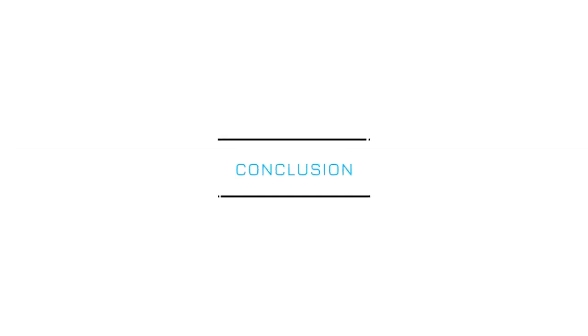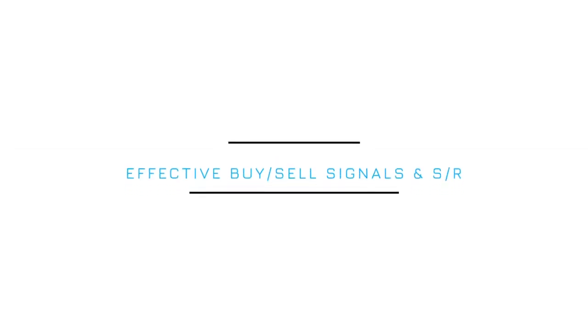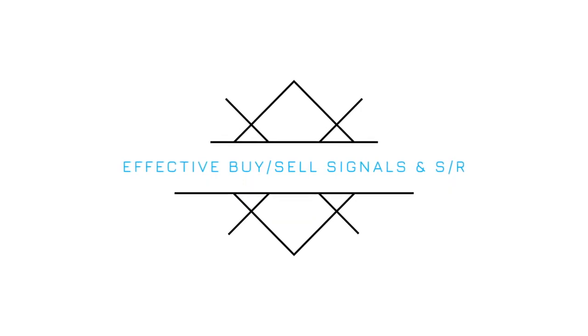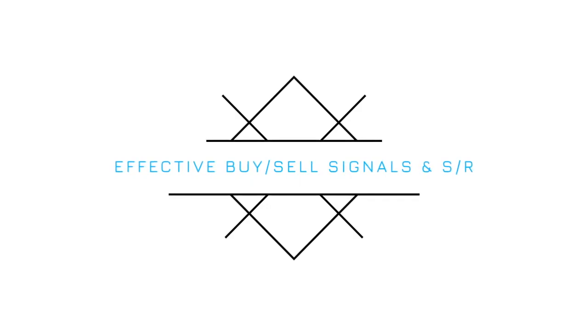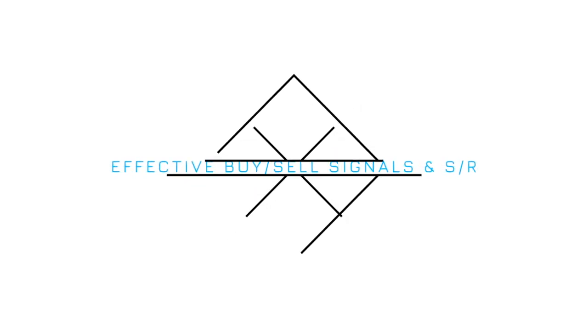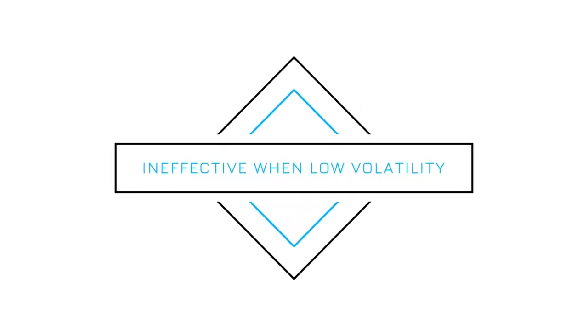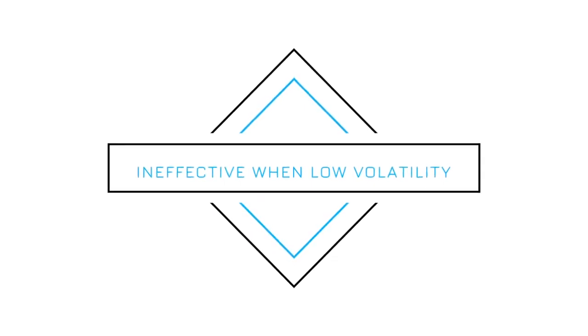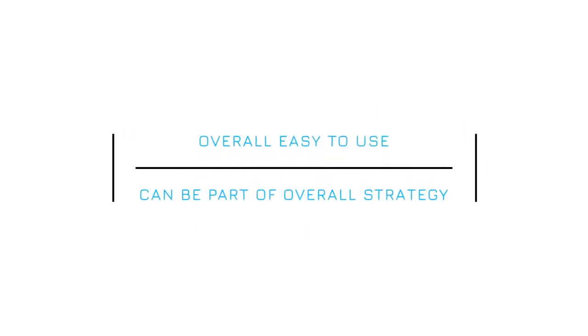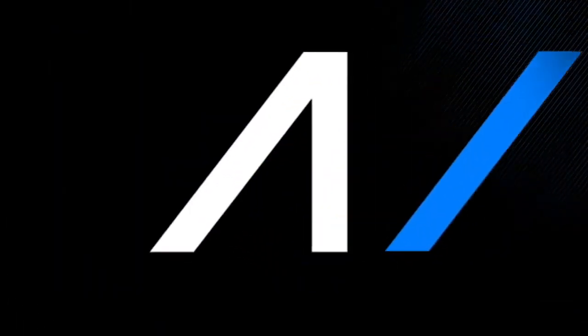The EMA Ribbon indicator is highly effective at providing buy and sell signals in volatile markets, alongside providing support and resistance. However, during periods of sideways trading, the indicator is ineffective and provides inaccurate signals. On the whole, the indicator is easy to follow and can be an effective part of an overall strategy.